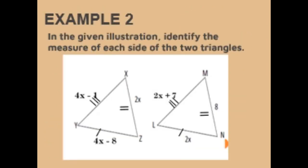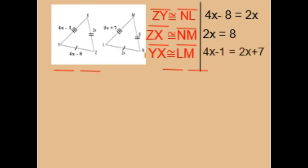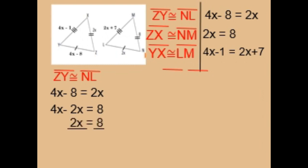Example number 2. In the given illustration, identify the measure of each side of the two triangles. The corresponding sides are: side ZY congruent to side NL (4x minus 8 equals 2x), side ZX congruent to side NM (2x equals 8), and side YX congruent to side LM (4x minus 1 equals 2x plus 7). Using side ZY congruent to side NL: 4x minus 8 equals 2x, so 4x minus 2x equals 8, giving 2x equals 8 and x equals 4.